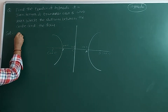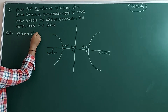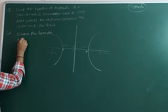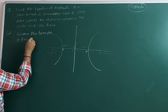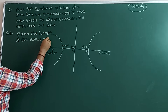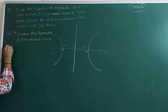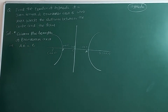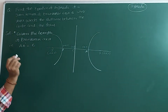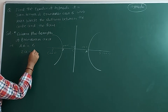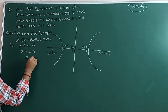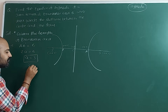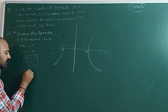Given the length of transverse axis AA dash is equal to 6. The length of transverse axis is equal to 2a. So, 2a is equal to 6, which gives a is equal to 3. So we got the value of a. Squaring on both sides, you will get a² is equal to 9.